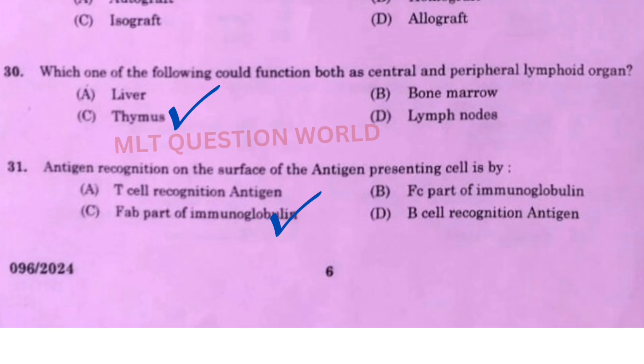Next one: Which of the following could function both as a central and peripheral lymphoid organ? The right answer is option C, thymus. Next one: Antigen recognition on the surface of the antigen-presenting cell is by the right answer option C, FAB part of the immunoglobulin.